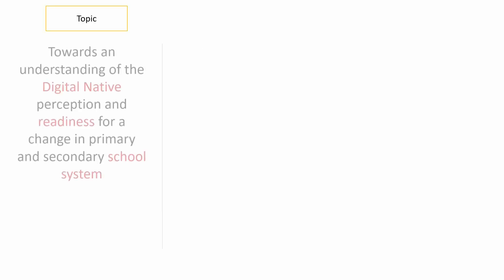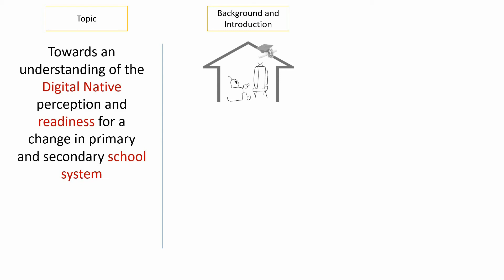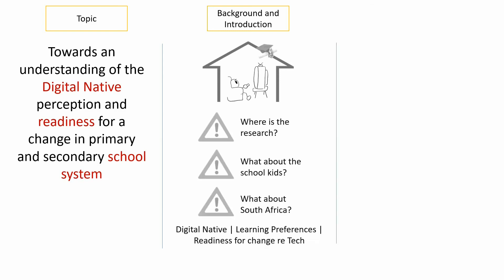Our topic: towards an understanding of the digital native perception and readiness for change in the primary or secondary school system. Background and intro: there is a call to radically change the school system because it has a presumably new type of student called the digital native who is practically addicted to technology. Our problem statement is that there is no research on the subject that speaks to the school kids in South Africa — so how do you know you're doing the right thing by radically changing the school system? In our study we would like to understand their digital native status, their learning preferences, and how ready they are for the change in the school system when it comes to the use of technology.